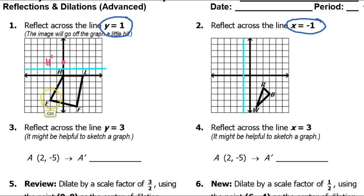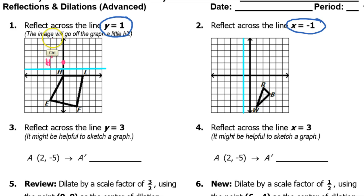Now for point e, that's 5 units below the blue line. So I'm going to go 5 units above the blue line, and that's going to be e-prime.